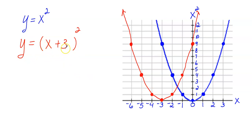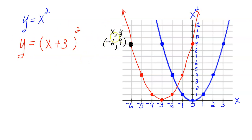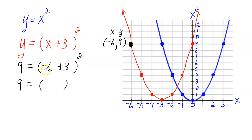Let me explain why this works. I'll pick a point on the red graph — how about this point here? Its coordinates are negative 6, 9, where negative 6 is x and 9 is y. I'll plug these into the equation: 9 equals negative 6 plus 3, squared. What's negative 6 plus 3? That's negative 3, squared. And negative 3 squared is negative 3 times negative 3, which is 9. So 9 equals 9 — this checks out and confirms the equation works.